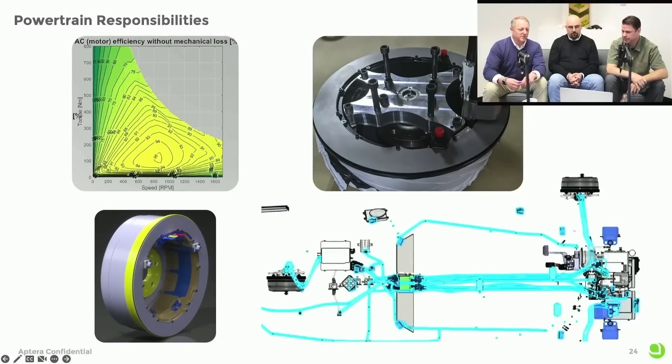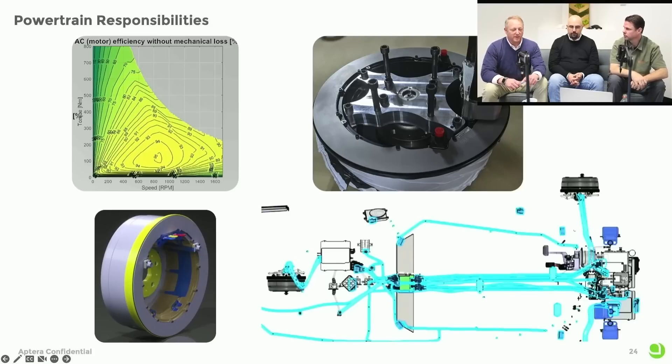If you look at the power curve, the standard motor that Elaphe developed was very efficient in a regime that was not our regime. It was very efficient under a higher load that you'd need for a heavy vehicle. But with the Aptera being so lightweight and having virtually no drag resistance at speed, it was in a different load regime compared to what they designed for.